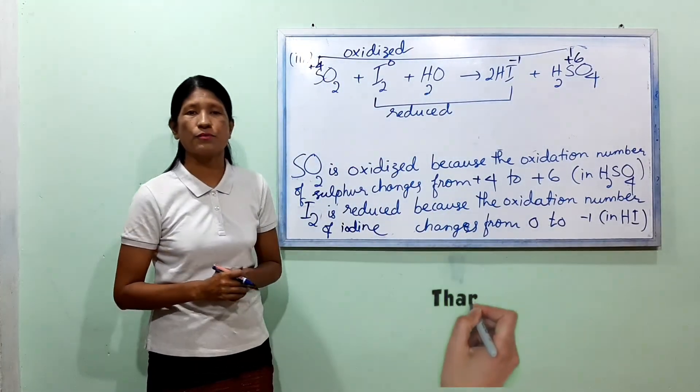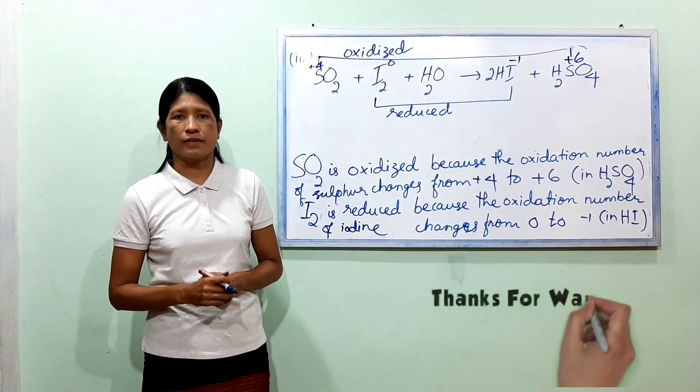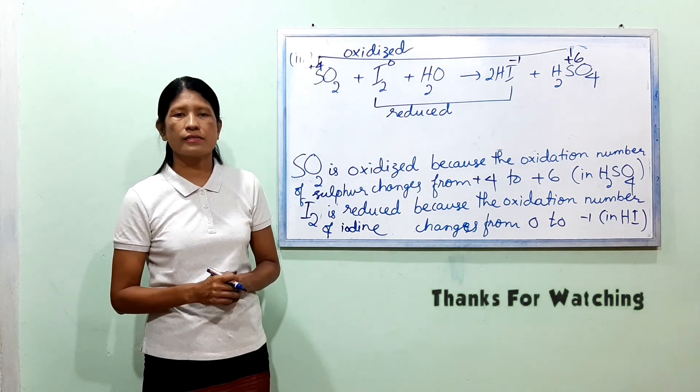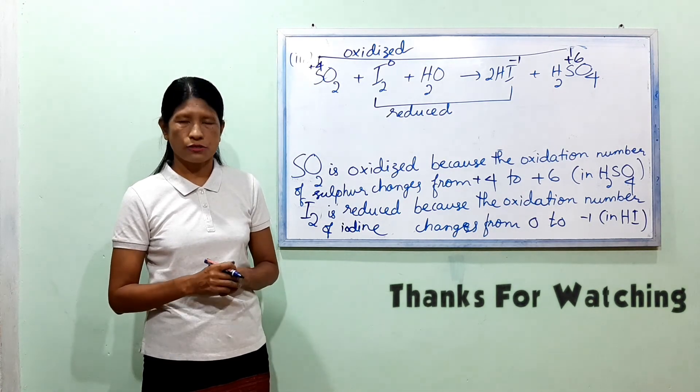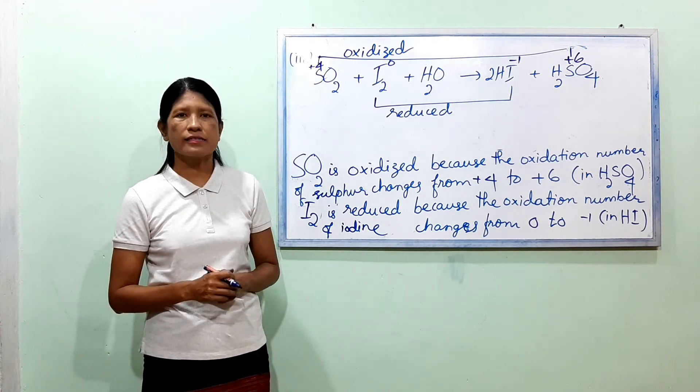Number seven: identify what is oxidized and what is reduced. Give reasons for your answers.